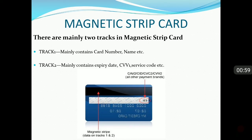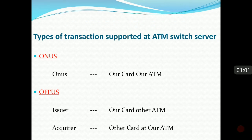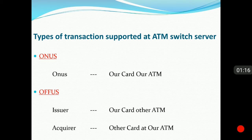Moving to the next slide, this covers the types of transactions supported at the ATM switch server. The first is on-us — our card on our ATM. On-us is divided into two parts: issuer, which is our card on another bank's ATM, and acquirer, which is another card at our ATM.